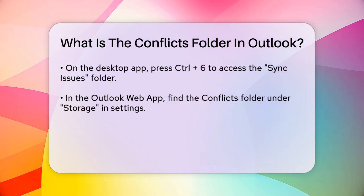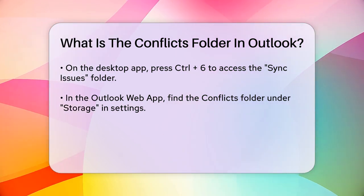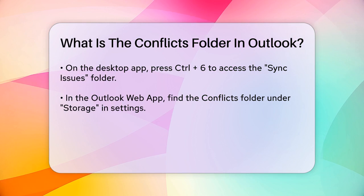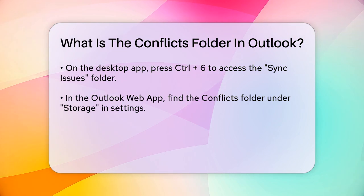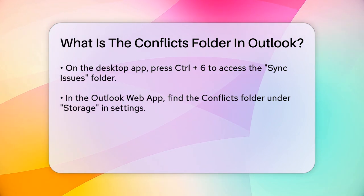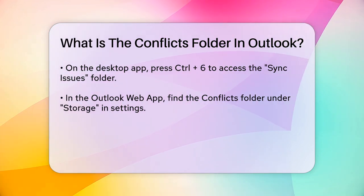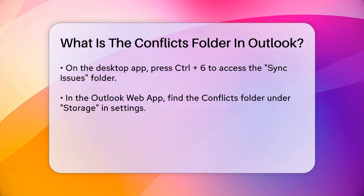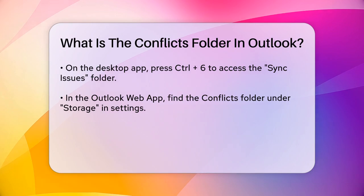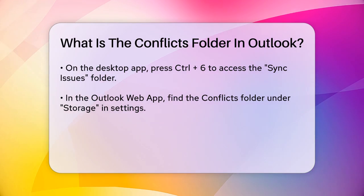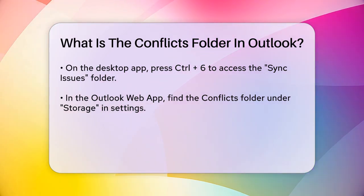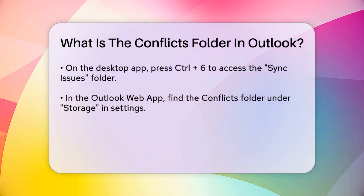The conflicts folder acts as a safety net, allowing you to review and manually resolve any conflicts that Outlook couldn't handle on its own. You can go through the items in this folder, decide which version is correct, and replace the one that Outlook retained with the one from the conflicts folder.